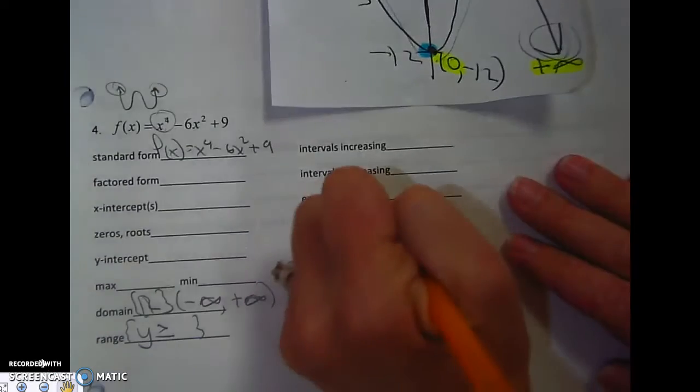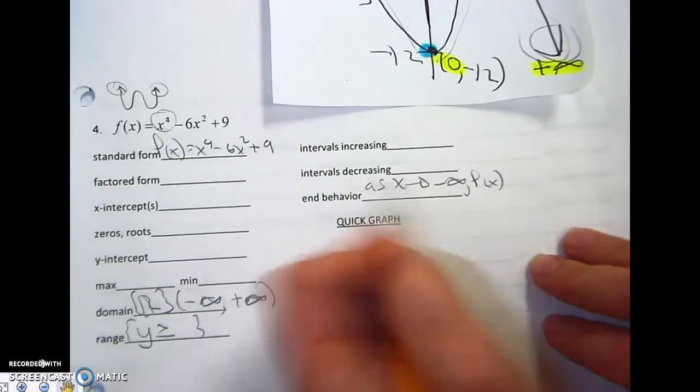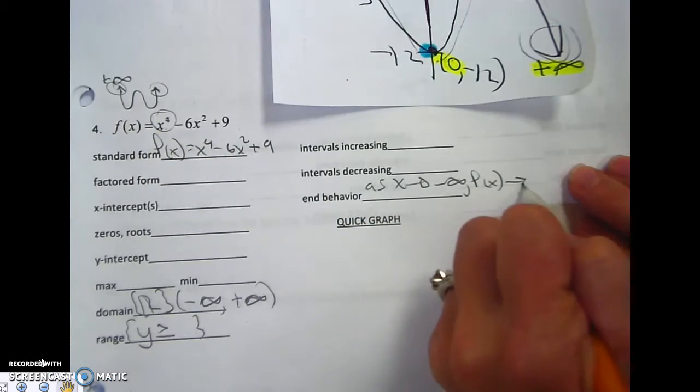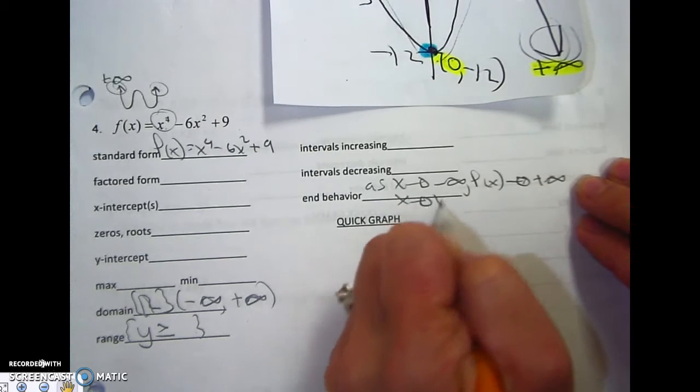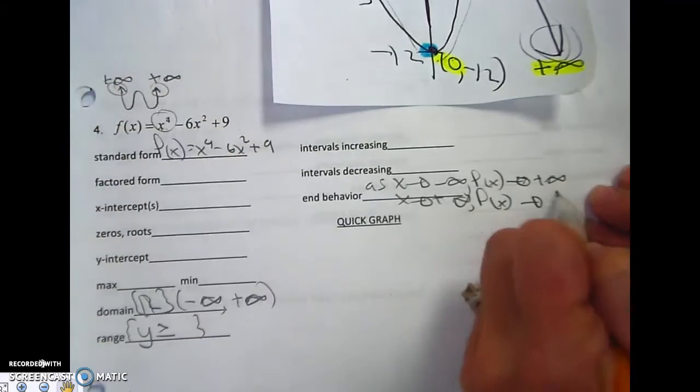I know the end behavior as x approaches negative infinity, f of x approaches positive infinity. As x approaches positive infinity, f of x approaches positive infinity, it's also going up.